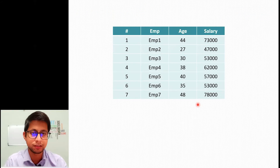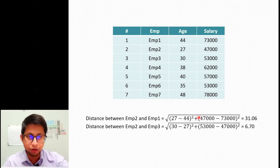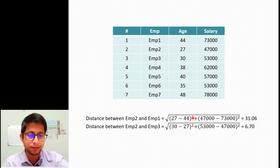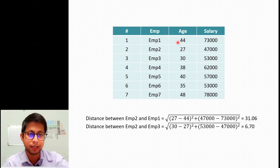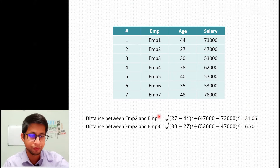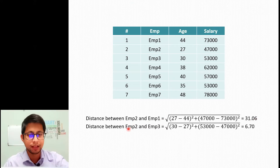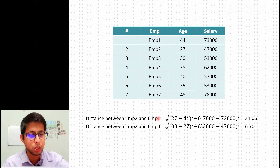Let's calculate the distance for employees one, two, and three without doing any feature scaling. The distance between employee two and employee one comes out as 31.06, and the distance between employee two and employee three comes around 6.70. Based on this you can say employee two and employee three are much more similar than employee two and employee one.